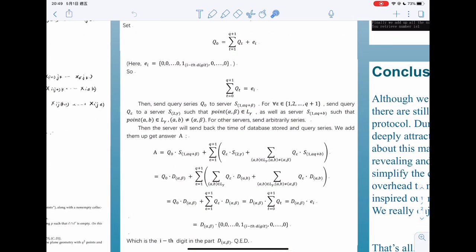Then we send q0 to the server s_αq plus β. And that is the server that stores the database of d_αβ.